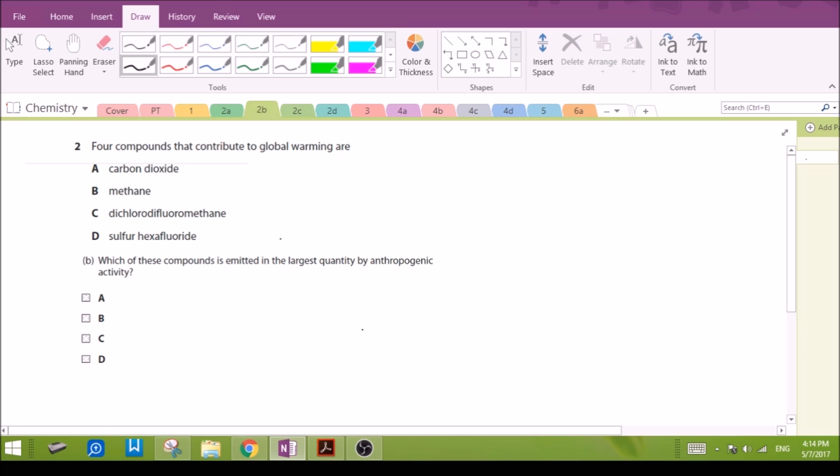Back to the four compounds again, which of these compounds is emitted in the largest quantity by anthropogenic activity, human activities? Among all of them, this is the background knowledge: carbon dioxide due to the burning of fuels. This one will be emitted in the largest quantity.